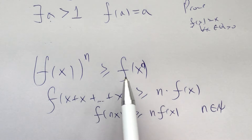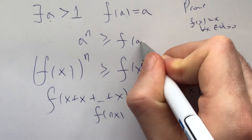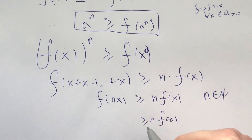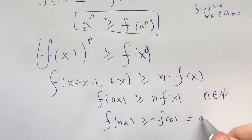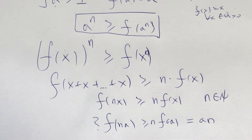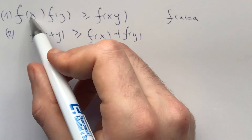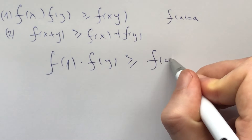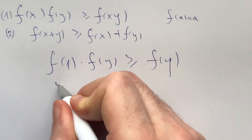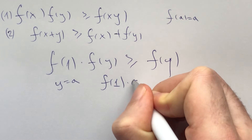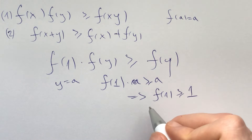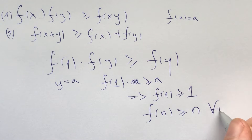However, these generalizations don't give us anything right away. Plugging in a gives us a^n ≥ f(a)^n. A more useful step: plug in x equals 1 in inequality one, and we get f(1)·f(y) ≥ f(y) for all y. Plugging in y equals a gives f(1)·a ≥ a, i.e., f(1) ≥ 1. This is progress, and it immediately implies that f(n) ≥ n for all natural numbers n.